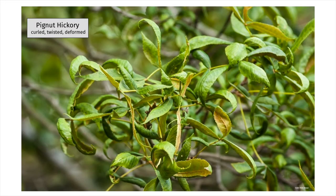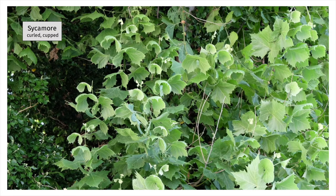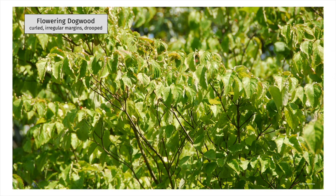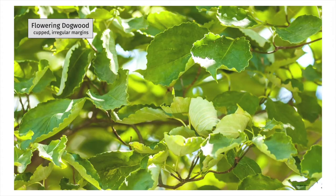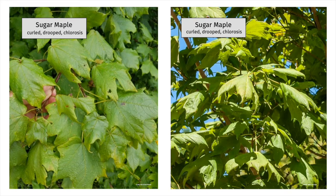This is pignut hickory — the leaves are curled and twisted. While sycamores can be prone to anthracnose, a fungal disease, in the spring, they appear to also be sensitive to growth regulator herbicides in mid-season. Here is a sycamore with some obvious downward cupping and curling. This is flowering dogwood — dogwoods commonly show symptoms of curling and irregular margins or edges. Here is another example of flowering dogwood with leaves showing irregular margins. This is a sugar maple showing some cupping and curling, with some drooping as well.